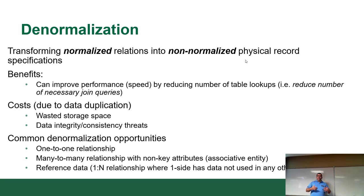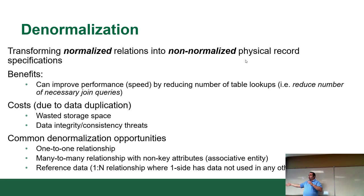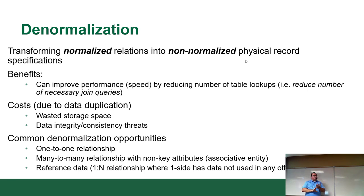There are some benefits to denormalization. It can improve performance — if you're dealing with millions of rows, the number of table lookups and scans gets reduced, so there's less overhead and it goes faster. However, because you're duplicating data — the whole point of normalizing was to avoid duplicate data — it's going to take up space. And you're bringing back update anomalies and insert anomalies.